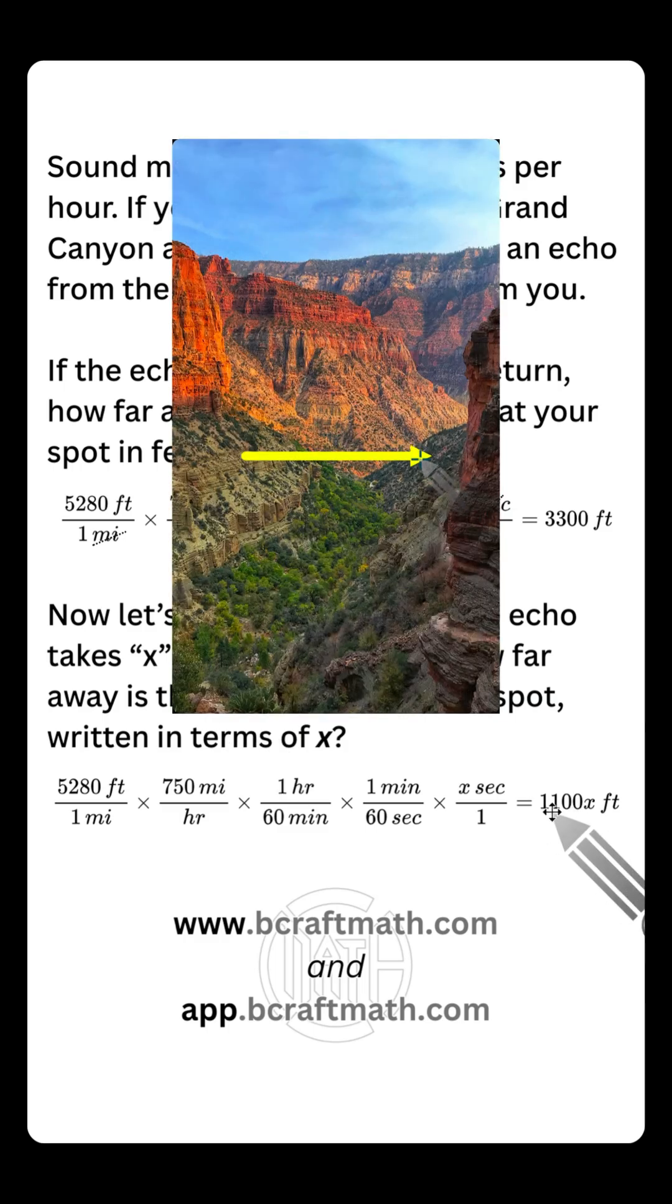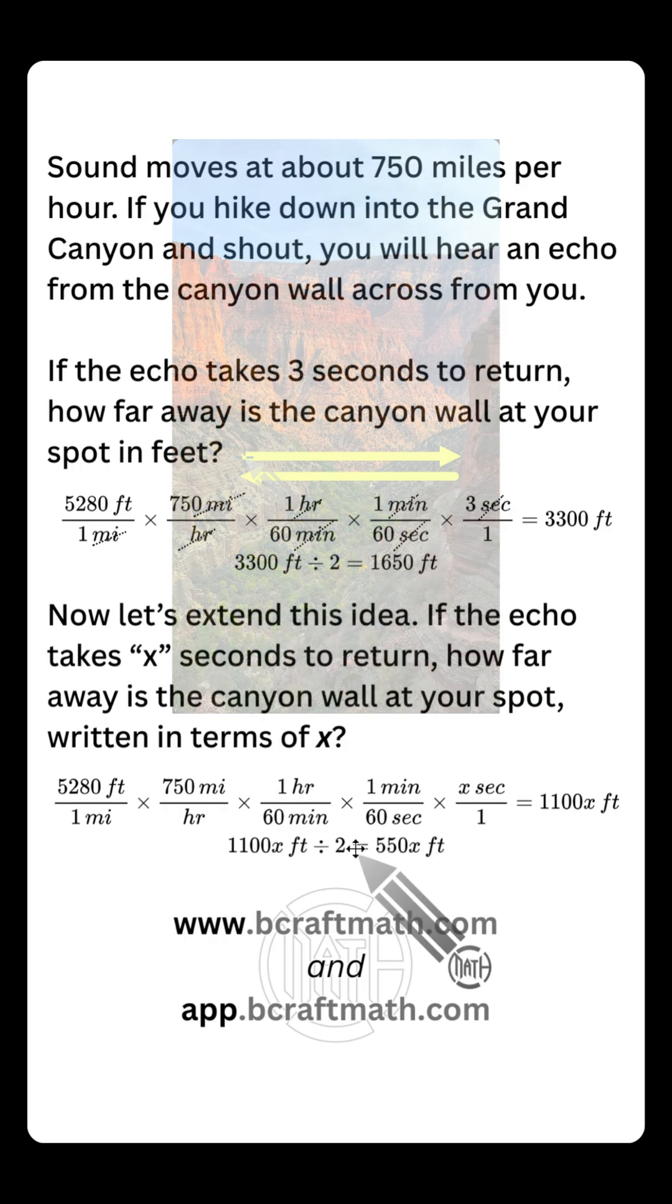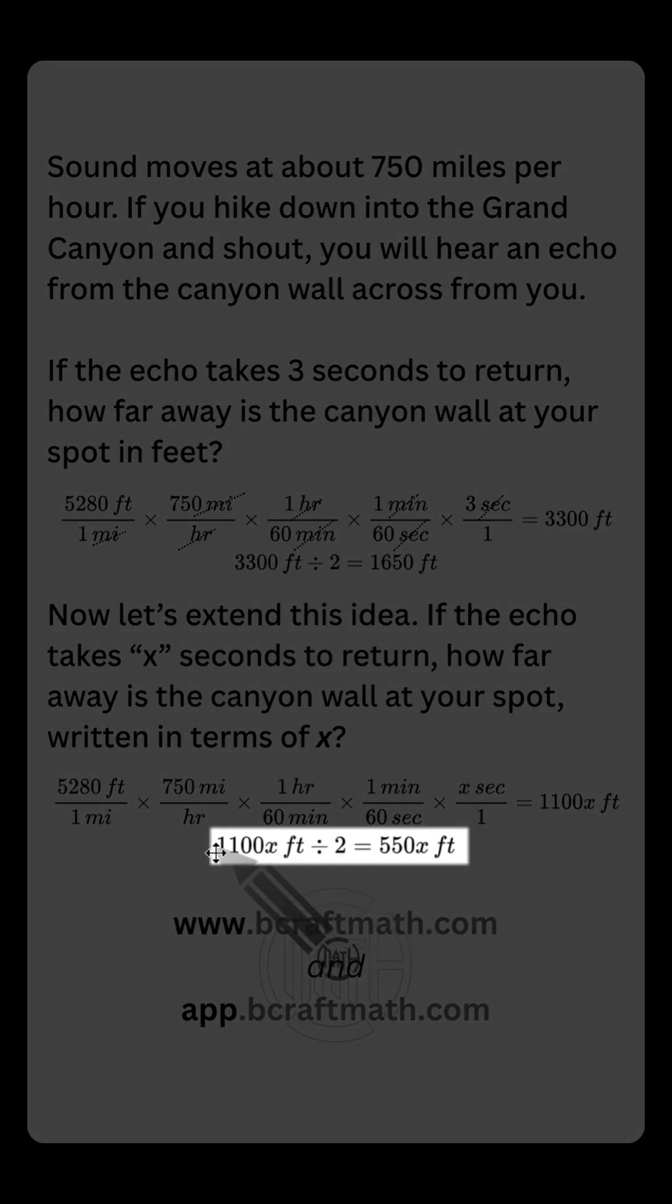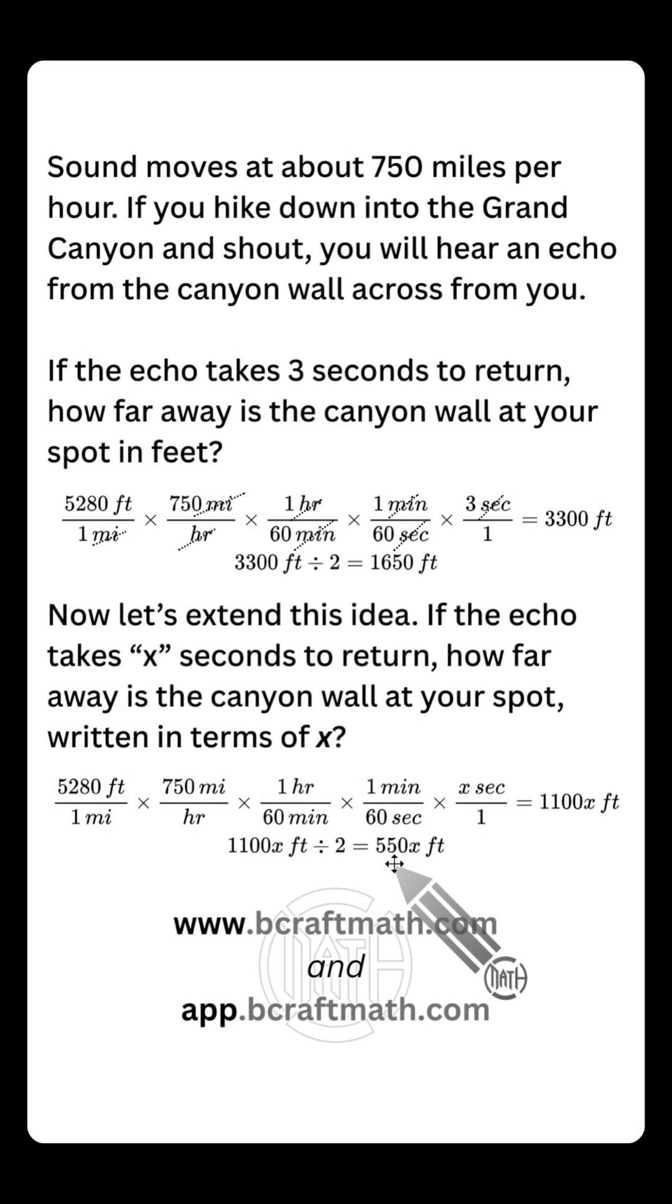But remember, this is the distance that it travels across the canyon and back to you. So if we divide that by 2, 1,100x divided by 2 is 550x - this formula, so to speak.